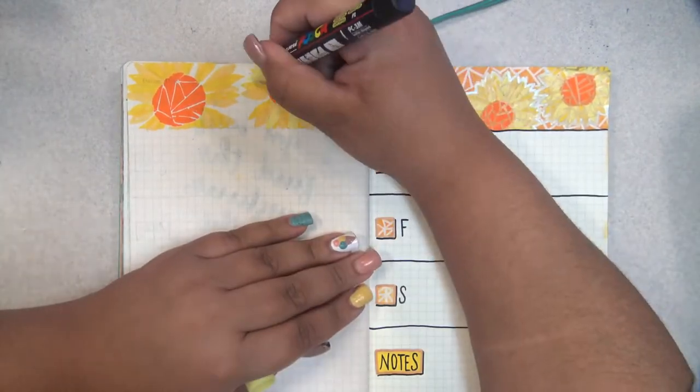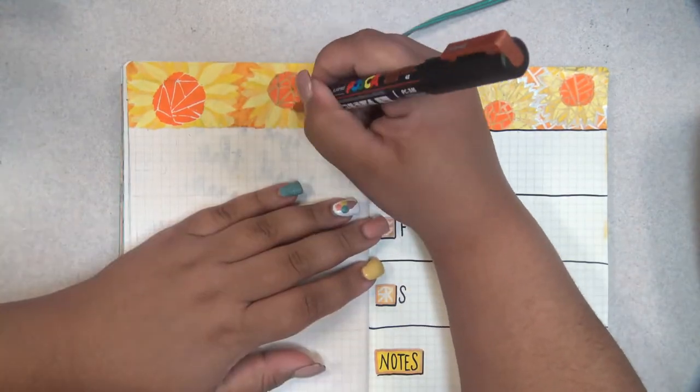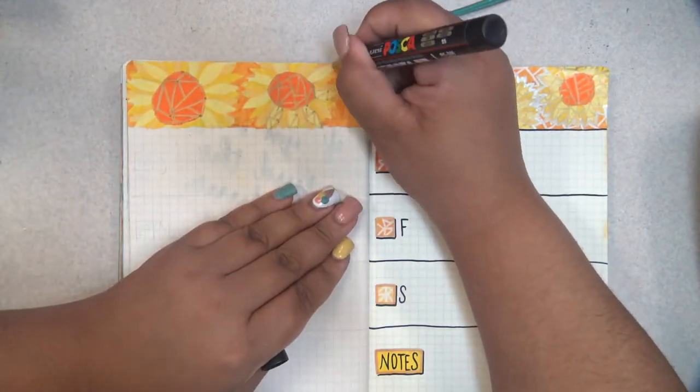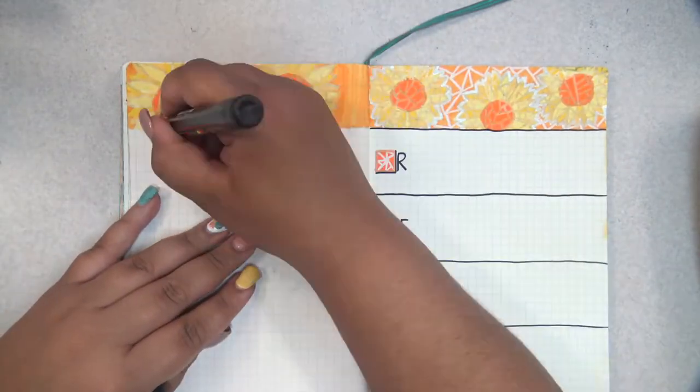Before I used the black 1 millimeter Posca to separate the day sections and add the dates on the top of the little mosaic squares, and also to add letters for the days of the week.